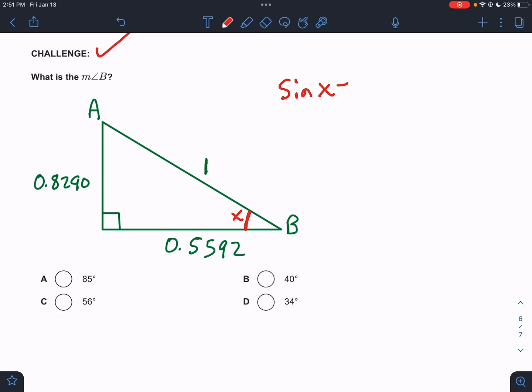If I said the sine of x, what would opposite over hypotenuse be? It would be 0.8290, right? It'd be over one, but over one doesn't do anything. So I'm trying to figure out, do any of these, when I do the sine of an angle, do they get me this ratio? So in my calculator, I'm just going to type them in. I type in the sine of 85. And I get 0.996. That one's out. I type in the sine of 40. I get 0.6427, out.